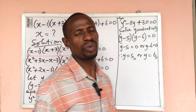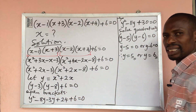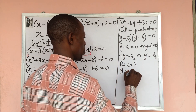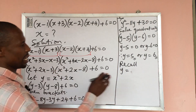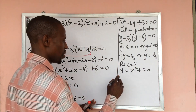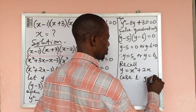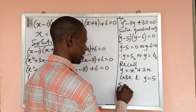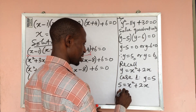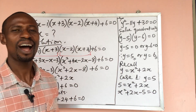These are the two values for y, but in the original equation we have x, not y. We recall that y = x² + 2x. Case 1: y = 5, so we have 5 = x² + 2x. Rearranging: x² + 2x − 5 = 0. This is another quadratic equation.